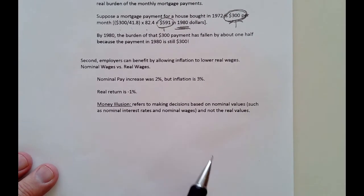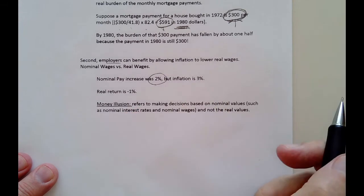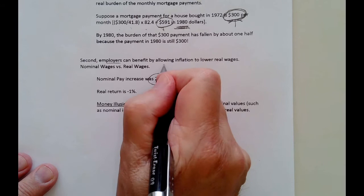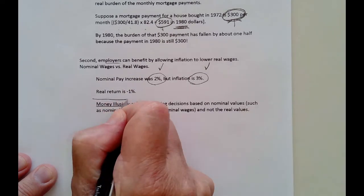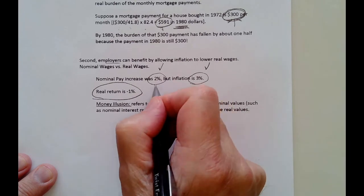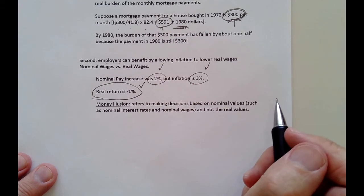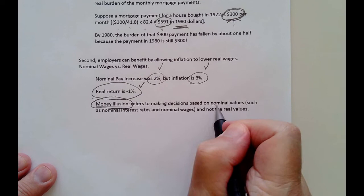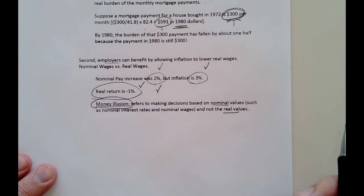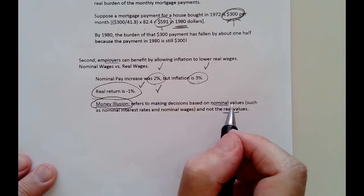The next group that can benefit are employers. Employers understand the real return concept. If your nominal pay increase is 2% but inflation is 3%, the employer can make the employee happy — they're getting a 2% pay increase. But the employer has not really given a raise. The employer has cut pay by 1%. The real return is negative one: you take the nominal return of 2% and subtract 3%. This is a clever way employers can cut workers' pay without them knowing it, through what's known as money illusion — when people make decisions based on nominal values rather than real values. If the employee feels better off because of a 2% pay increase, that's money illusion, because pay has not increased in real terms; it has decreased.